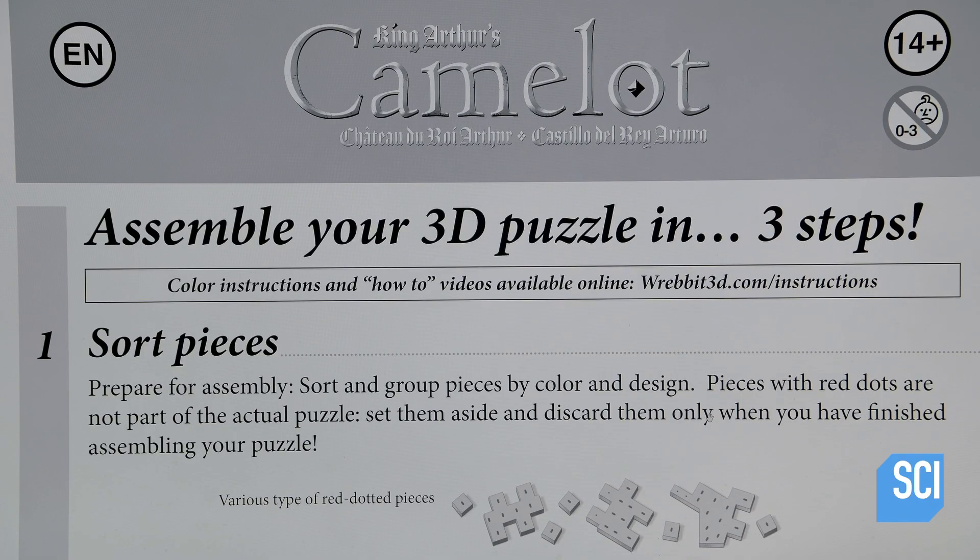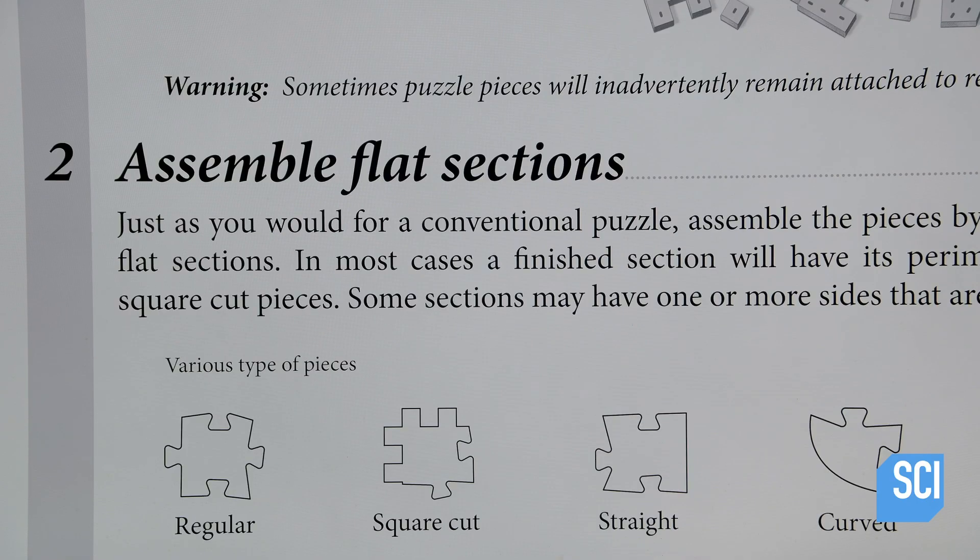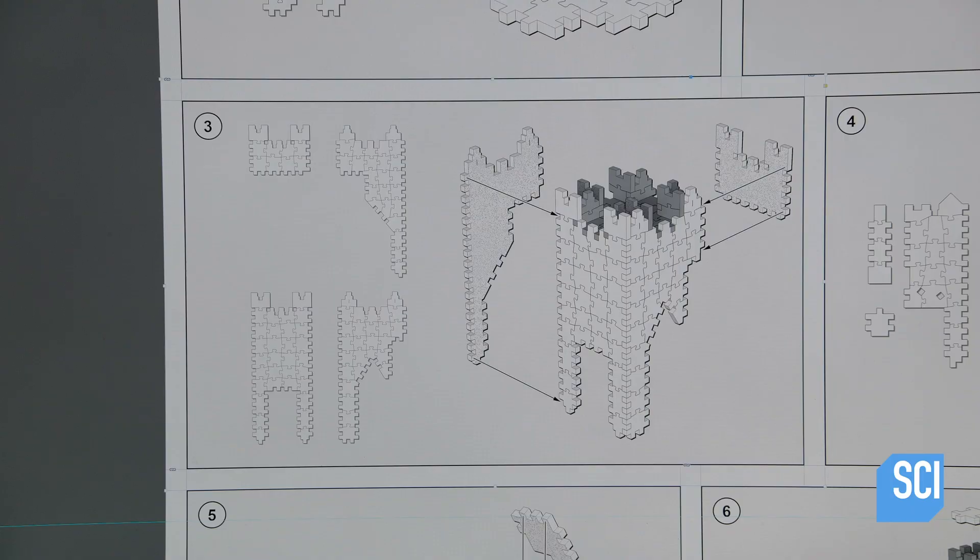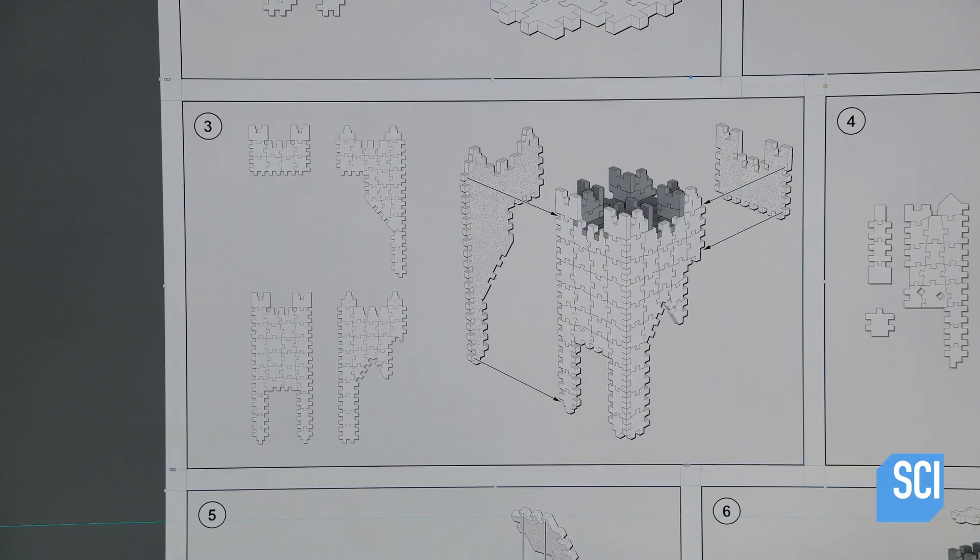The next step is to assemble the puzzle section by section. All the sections are flat, so the final step is to attach the flat sections to make the puzzle three-dimensional.